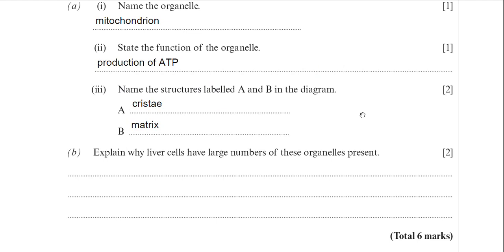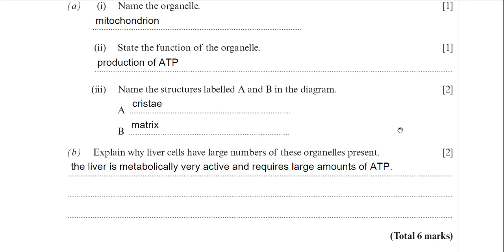Lastly, part B: explain why liver cells have large numbers of these organelles. The liver is an extremely active organ — it carries out many, many reactions, so it's metabolically active. It carries out lots of reactions and therefore requires large amounts of ATP, because they're all energy-dependent reactions. The liver is metabolically very active and requires large amounts of ATP.